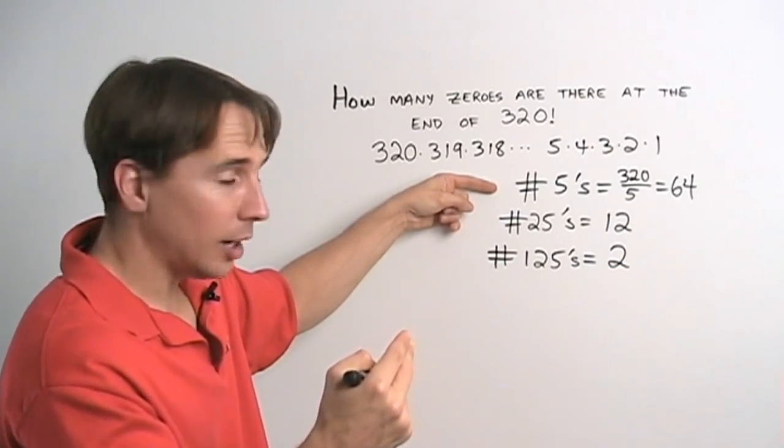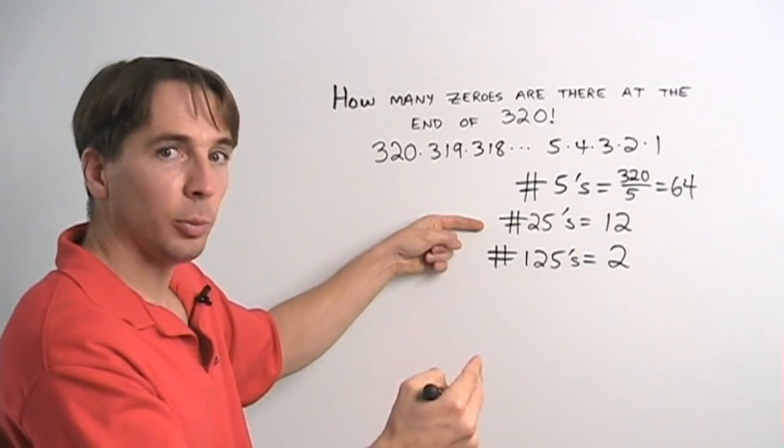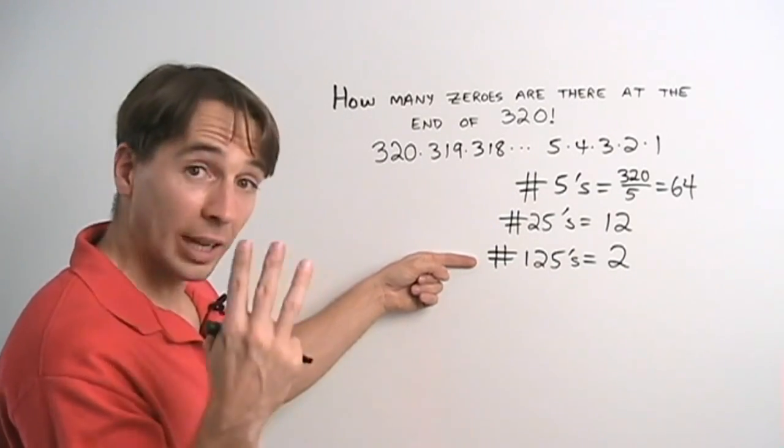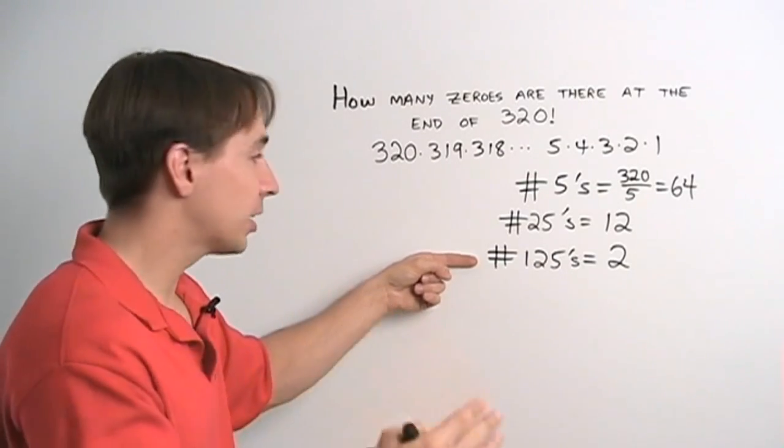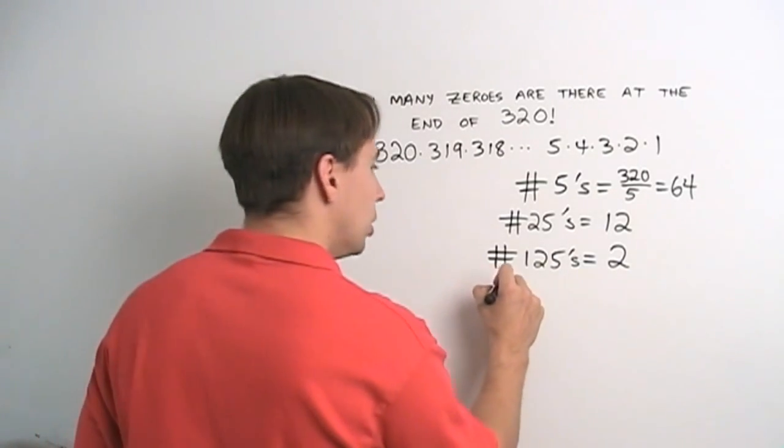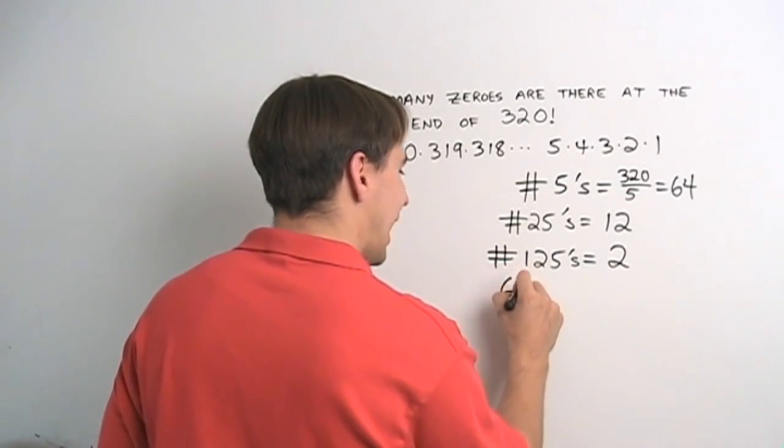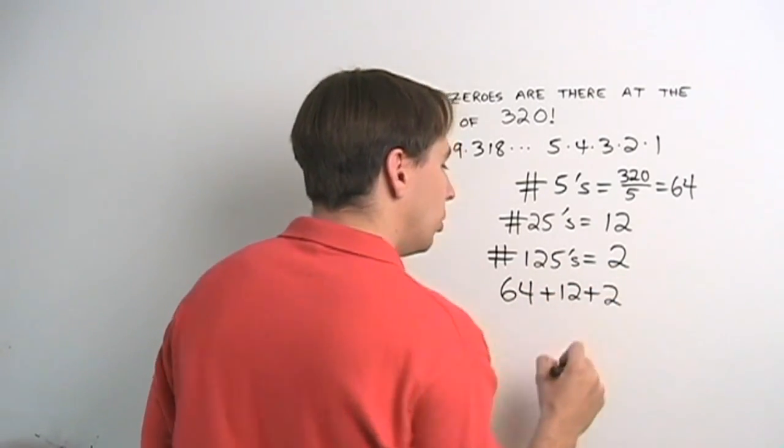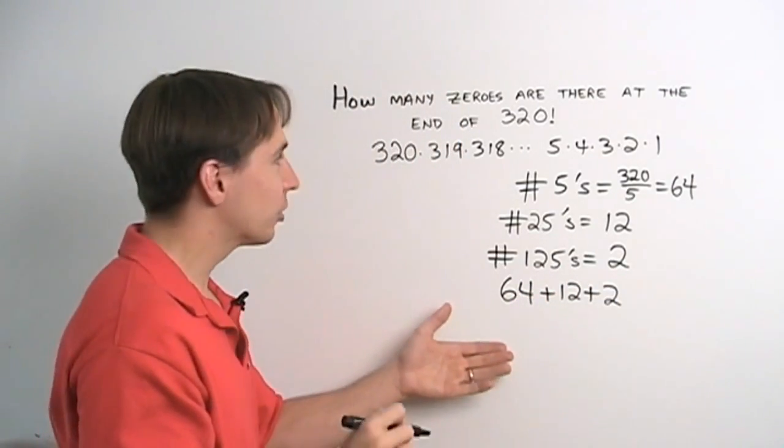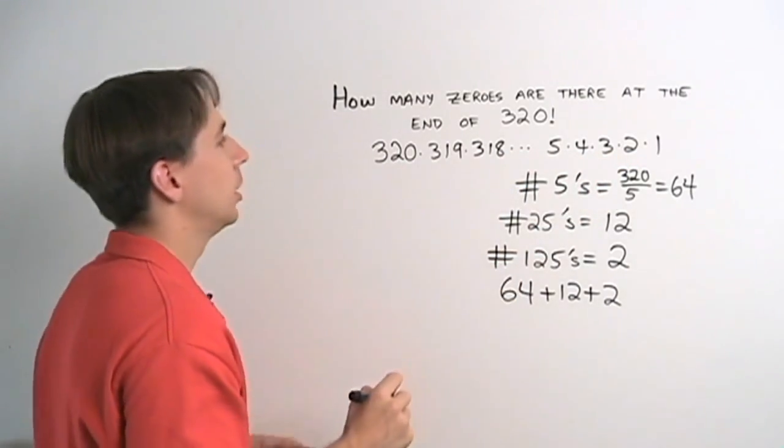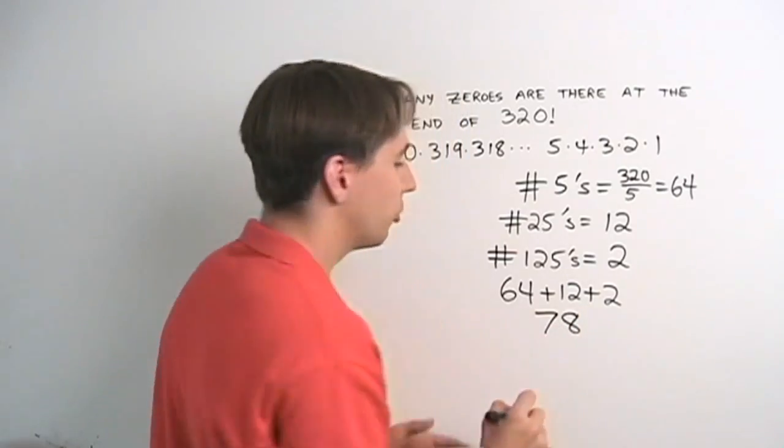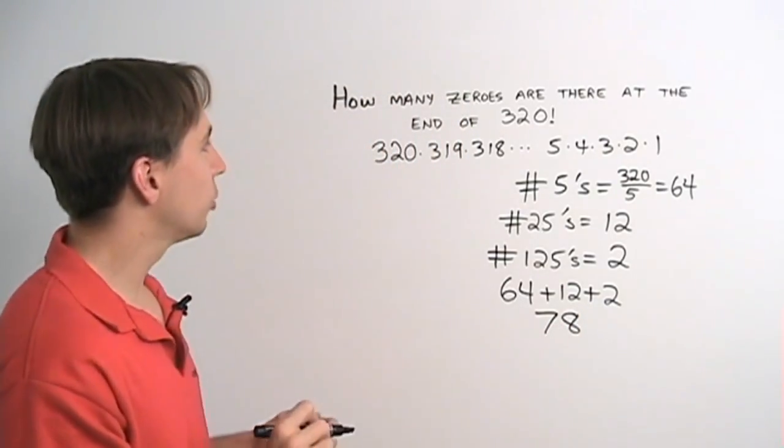And the same, a similar thing happens with our 125s. We count them once here, because they're multiples of 5. Count them once here, because they're multiples of 25. And then we count them again here, because they're multiples of 125. We count them three times, once for each factor of 5. And that's exactly what we want to do. So we see that if we just add these three numbers, we get the total number of factors of 5 in 320 factorial. When we add those up, we have 78 factors of 5 in 320 factorial.